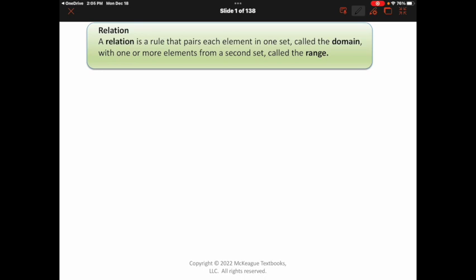We're going to first start talking about relationships and functions. A relation is a rule that pairs each element in one set called the domain with one or more elements from a second set called the range. This is just a fancy way of saying that we have two sets of numbers or values and we are going to pair them together. Now, a function is a very specific kind of relation. Every function is a relation, but not every relation is a function.